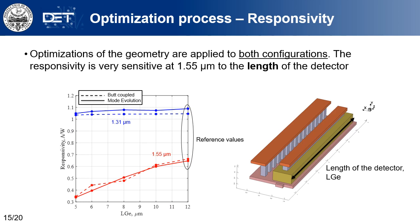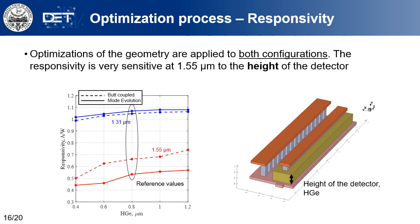Starting from variation of the length: at 1.31 micrometers, the two configurations show low sensitivity to detector length, and responsivity changes only a few percent with respect to the reference case. At 1.55 micrometers instead, a drastic change is present — reducing the detector length causes responsivity to decrease in both configurations. Regarding height variation at 1.31 micrometers, responsivity again changes only a few percent, whereas at 1.55 micrometers the device experiences a reduction in responsivity that is quite different for the two configurations.